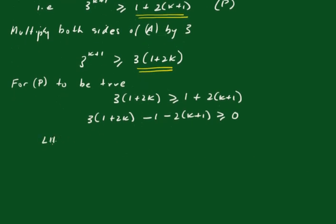The left hand side is equal to, removing the brackets, 3 plus 6k minus 1 minus 2k minus 2. All these numbers cancel out, and we just get 4k.